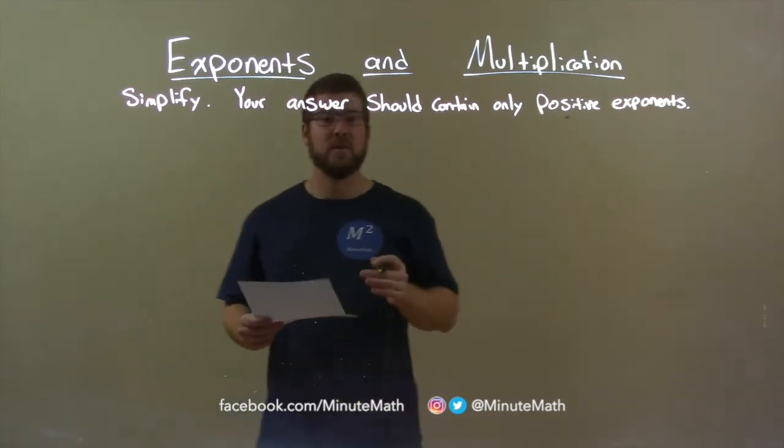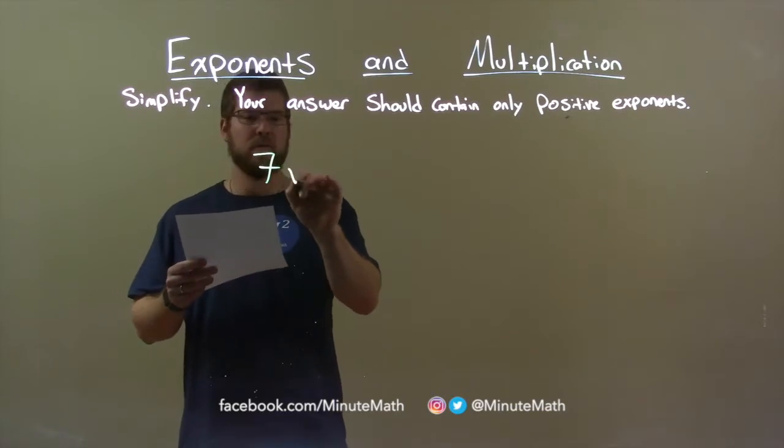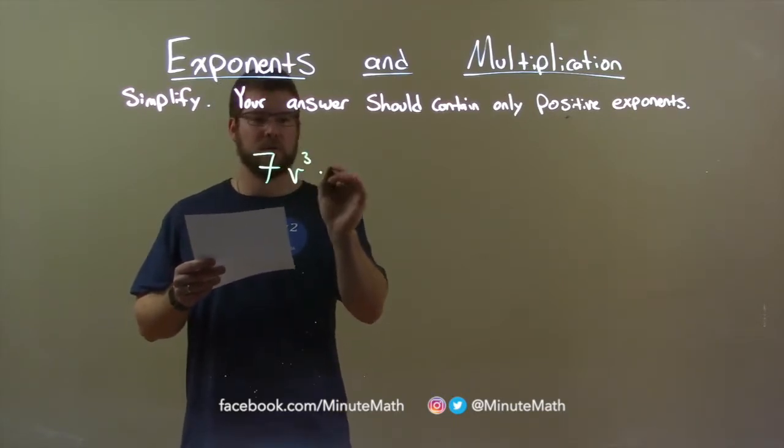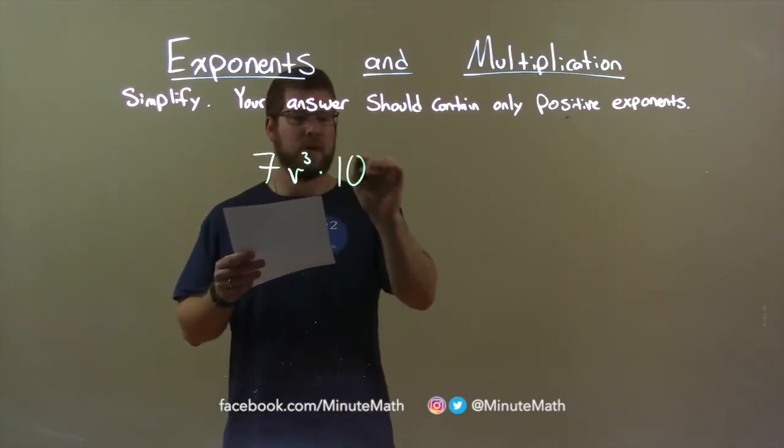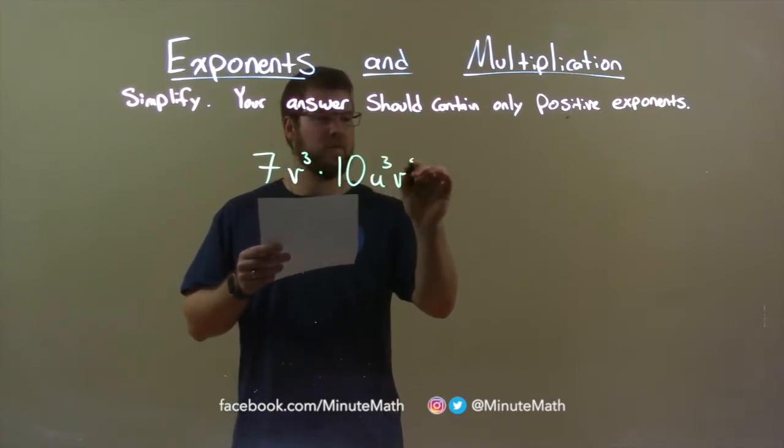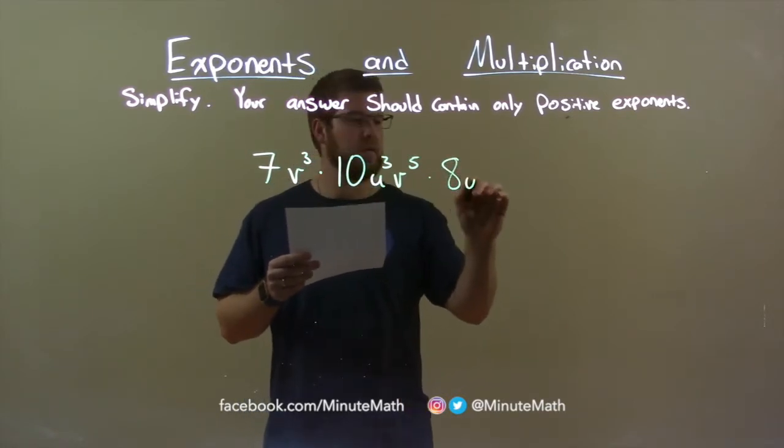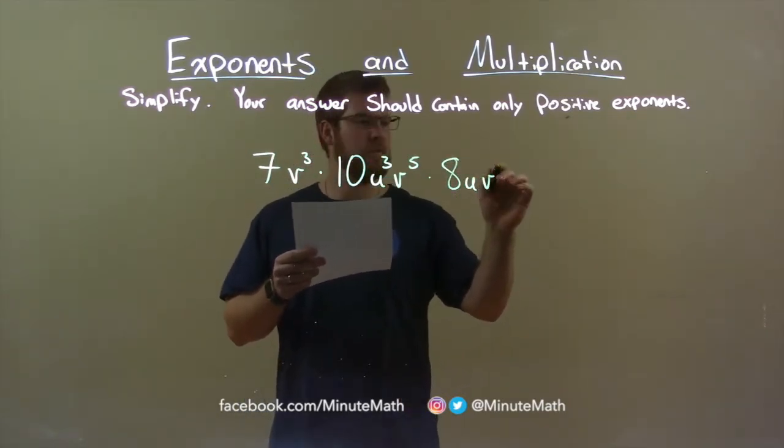So if I was given this problem: 7v to the third power times 10u to the third power times v to the fifth power times 8uv to the third power.